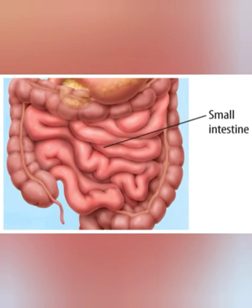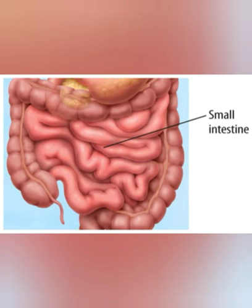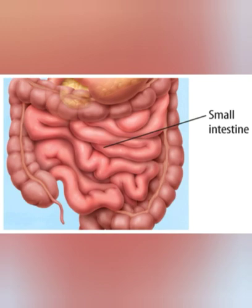The small intestine is a long tube arranged in a coiled form. It is called small intestine because it is quite narrow in diameter, although its length is very large. Finger-like projections called villi are located inside the small intestine. The villi absorb all the nutrients present in the food and send them to the blood.